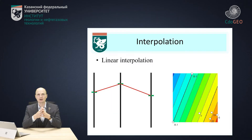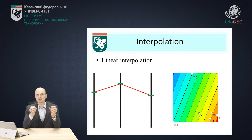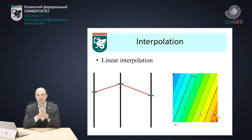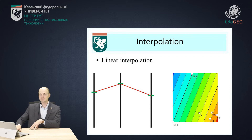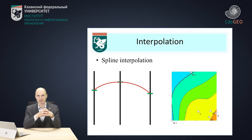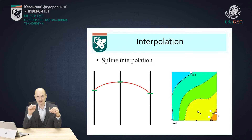There are a lot of different methods of interpolation. One of the easiest is linear interpolation. In the case of linear interpolation, we simply connect the points with a straight line. This method is simple, but it cannot be used in all situations. For that reason, we usually use a slightly different method, which is called spline interpolation — interpolation with smooth lines, where we connect the points with a smooth function.